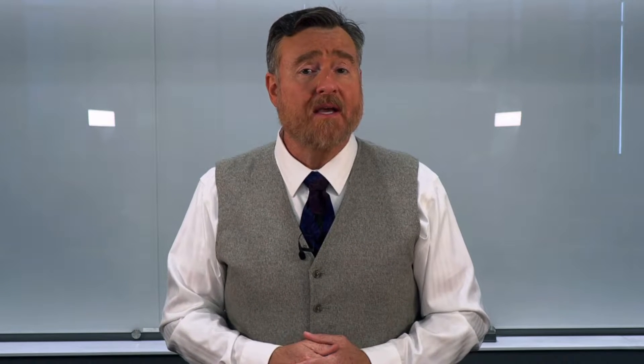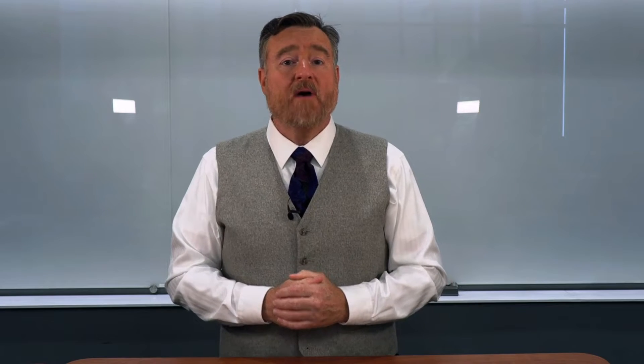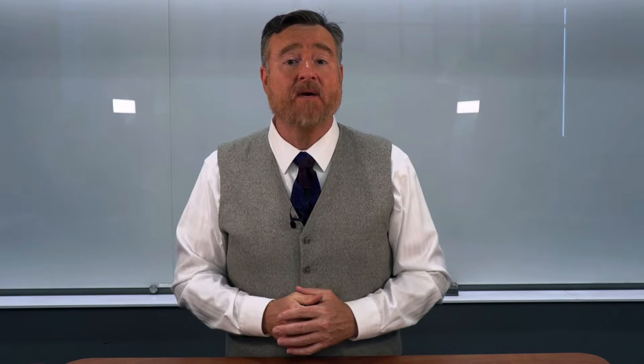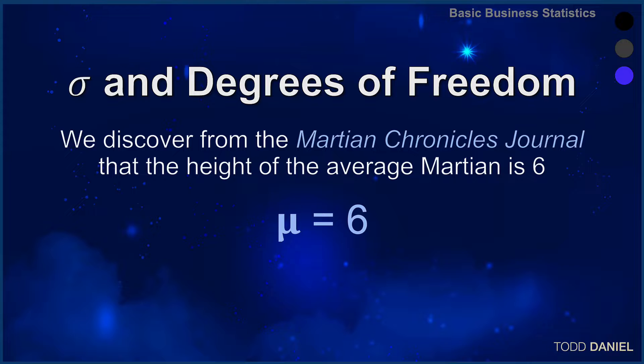For this next illustration, I'm going to need a population that would be utterly unknown to you. And so I'm going to use the height of the average Martian. I will assume that you know nothing about Martians, that you do not have a favorite Martian, but you do have access to the top-tier academic journal about Martians, the Martian Chronicles Journal. Reading the MCJ, we learned that the population of Martians has been measured, and that the height of the average Martian is six.